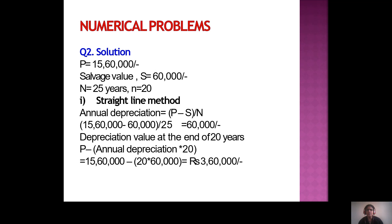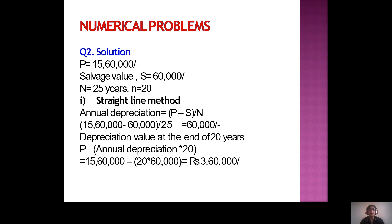Depreciation value at the end of 20 years using straight line method = P − (annual depreciation × 20) = 15,60,000 − (20 × 60,000) = 15,60,000 − 12,00,000 = rupees 3,60,000.